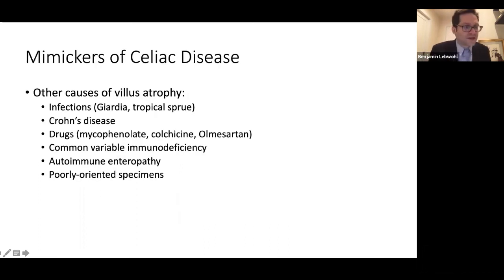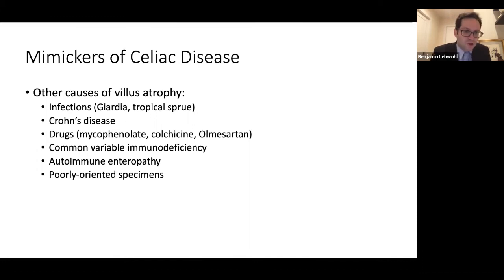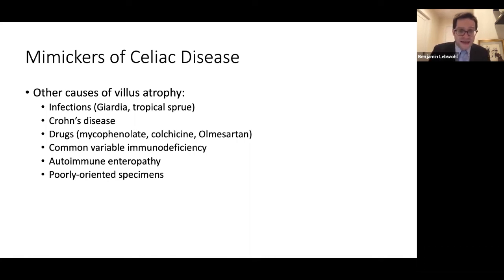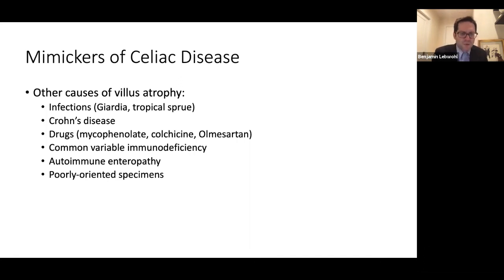Now there are mimickers — people who have those changes on their biopsy of the intestine but don't have celiac disease. Here's a long list of some of the other things that can cause villous atrophy. Just because someone has a biopsy that looks like celiac does not necessarily mean they definitely have it. That's why we like to rely on both the blood test and the biopsy. It is possible that someone has a normal blood test and a biopsy that shows celiac disease and indeed they have it, but we always look very closely at that situation and make sure gluten is the culprit and that they get better with a gluten-free diet.